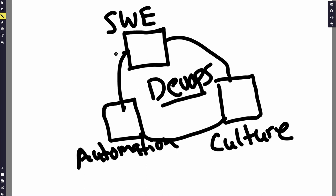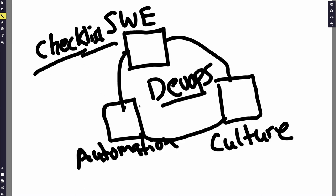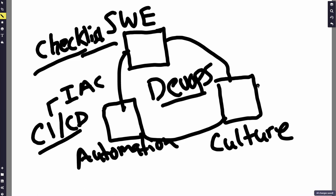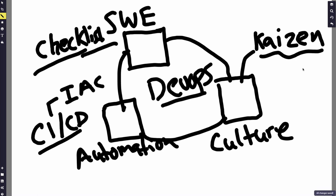Software engineering best practices are essentially a checklist of things you do when building out your project. Automation means CI/CD — continuously delivering your code — plus infrastructure as code. The culture component is captured by the Japanese term 'kaizen,' from the automobile industry, meaning continuous improvement. This feedback loop structure is what we'll build on today.